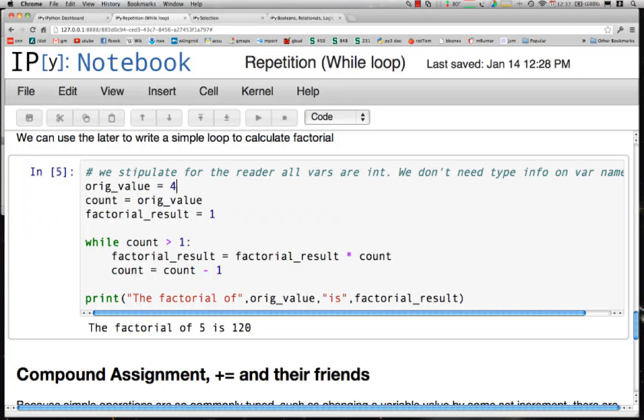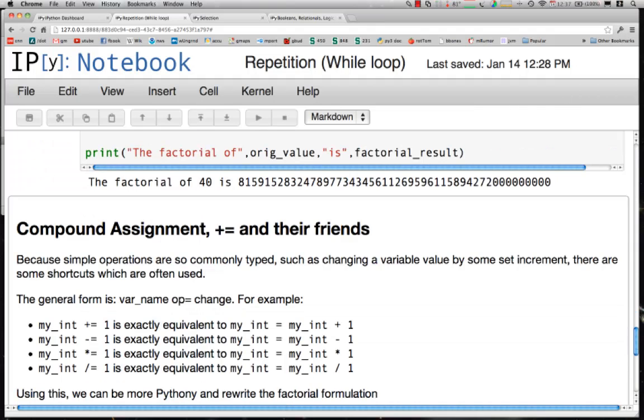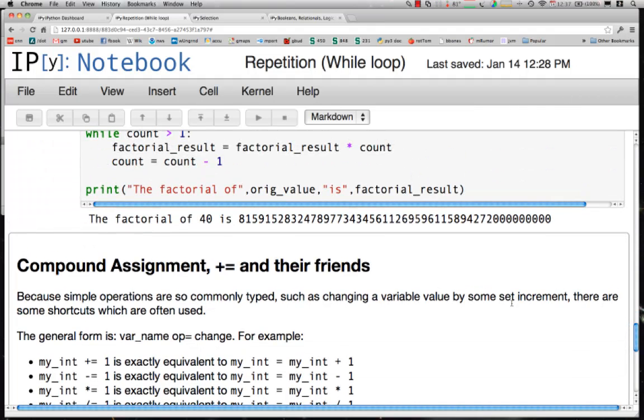If we make it a really big value, like 40, remember we said that integer values are exact and we get really big numbers. There is a really big number.